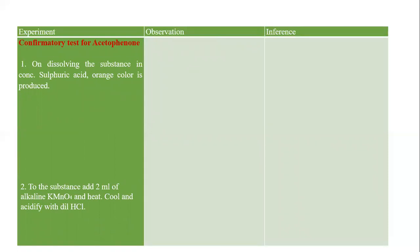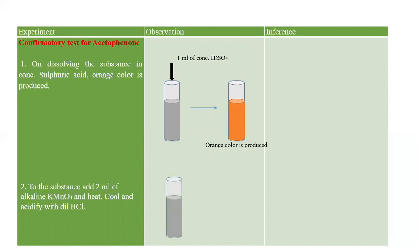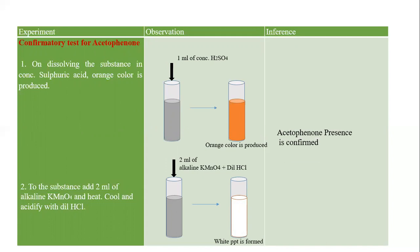In the laboratory, students are often given acetophenone as the ketone sample. We have two confirmatory tests for acetophenone. First, solubility in concentrated H₂SO₄ — the compound is soluble and an orange color develops, suggesting acetophenone may be present. For confirmation, we take KMnO₄, heat it, pour, and then add dilute HCl to acidify — a white precipitate forms, confirming that the unknown sample is acetophenone.